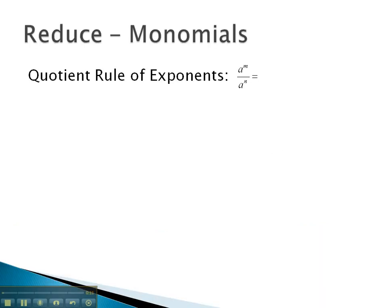Remember, when reducing with monomials, we had the quotient rule of exponents, which said if we had the same base on top and bottom, we could simply subtract the exponents to get m minus n, or whatever number that would be.